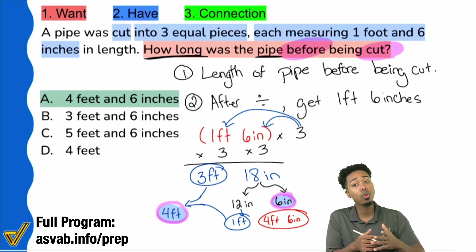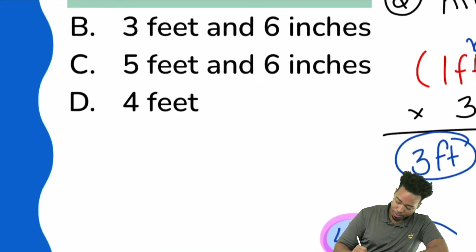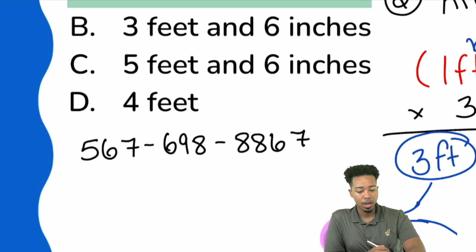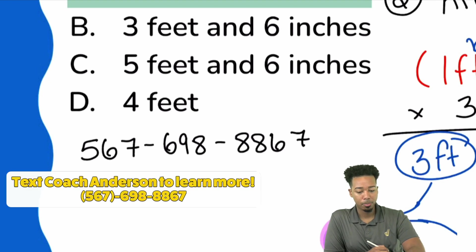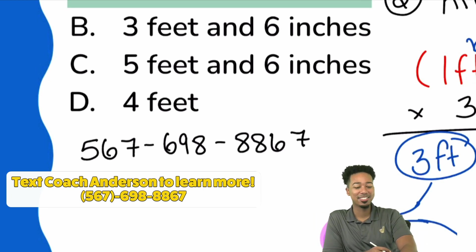And if you have any questions, you can feel free to reach out to me. My phone number is right here: 567-698-8867. That is my phone number. I also have a texting little button right here. You can go ahead and text me right there. 567-698-8867, nice and easy, my party people.